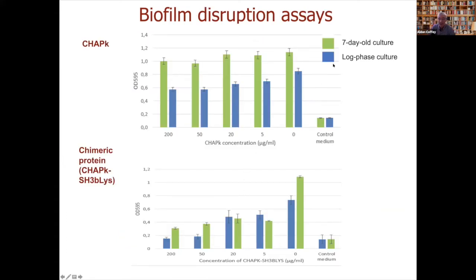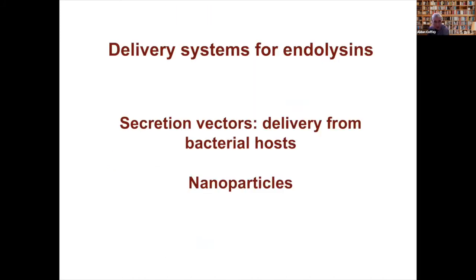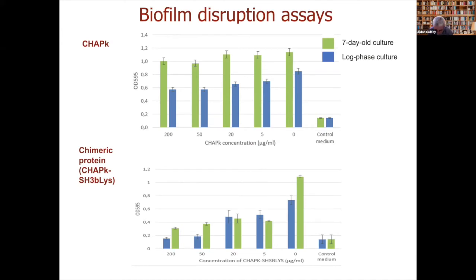Quantifying this: the green represents seven-day-old cultures — the optical density of surviving biofilm. Adding various concentrations of CHAP enzyme gives no great reduction in biofilm density with seven-day-old cultures, though some reduction with fresh cultures. With the chimeric protein, you see far better reduction in optical density of the biofilm. We're advancing that work in the context of real physiological biofilms with the Royal College of Surgeons in Ireland, and that work is ongoing.